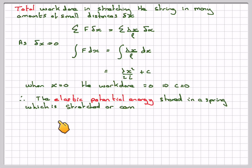Therefore, we end up with the expression: the elastic potential energy, which is what it's called, stored in a spring or string which is stretched or compressed by an amount x, is given by lambda x squared over 2L, where lambda is the modulus of elasticity, x is the extension, and L is the original length of the string or spring.